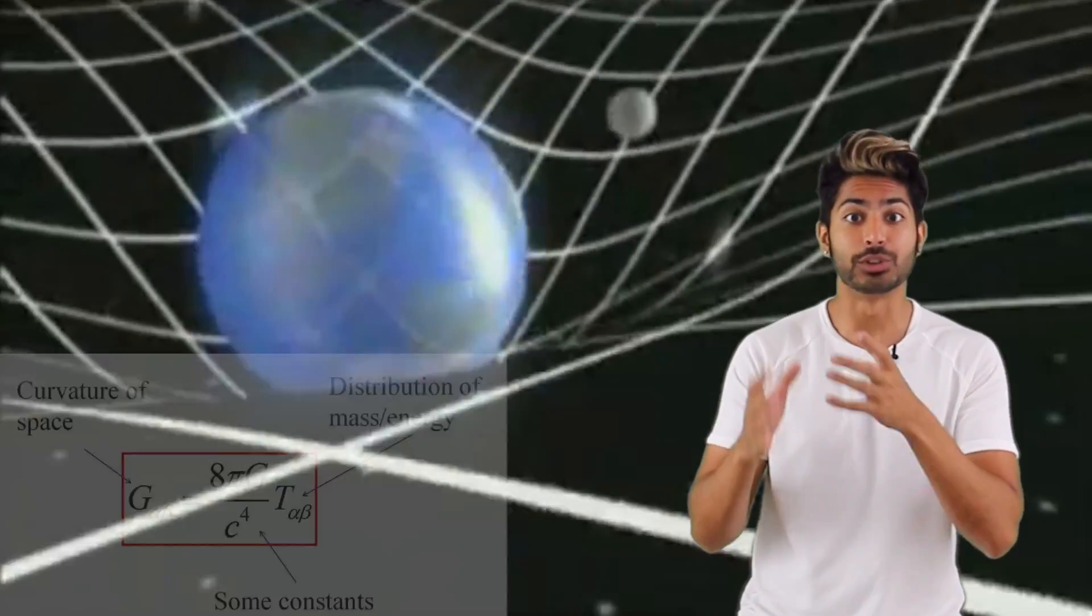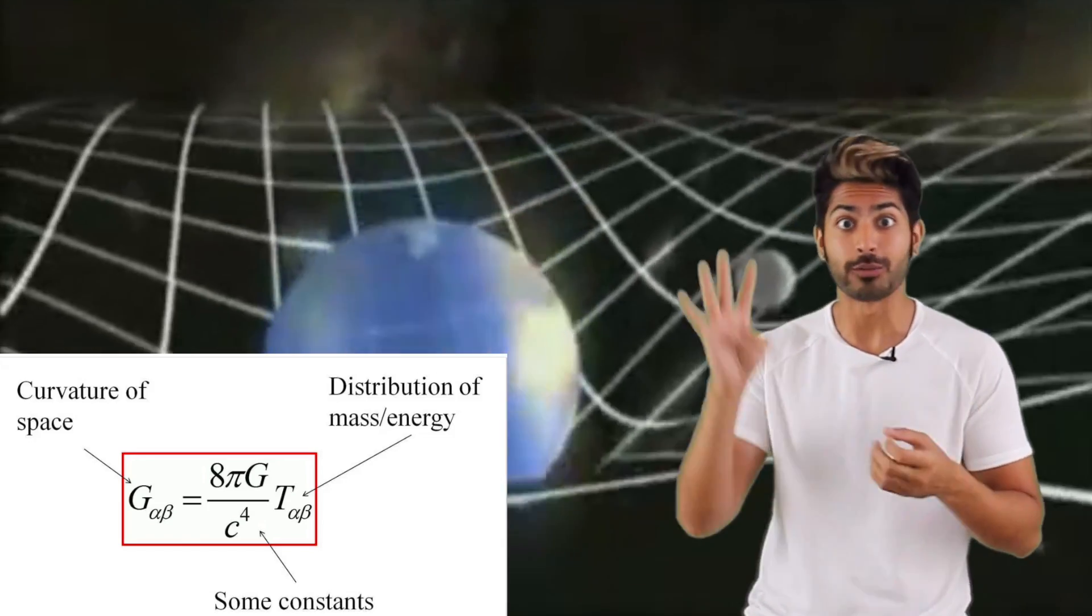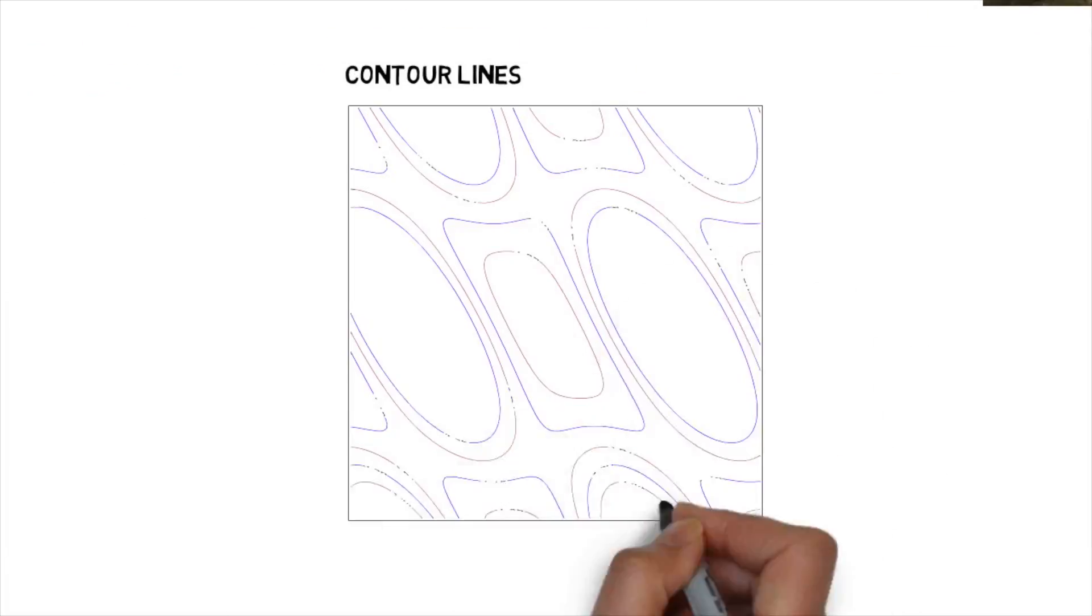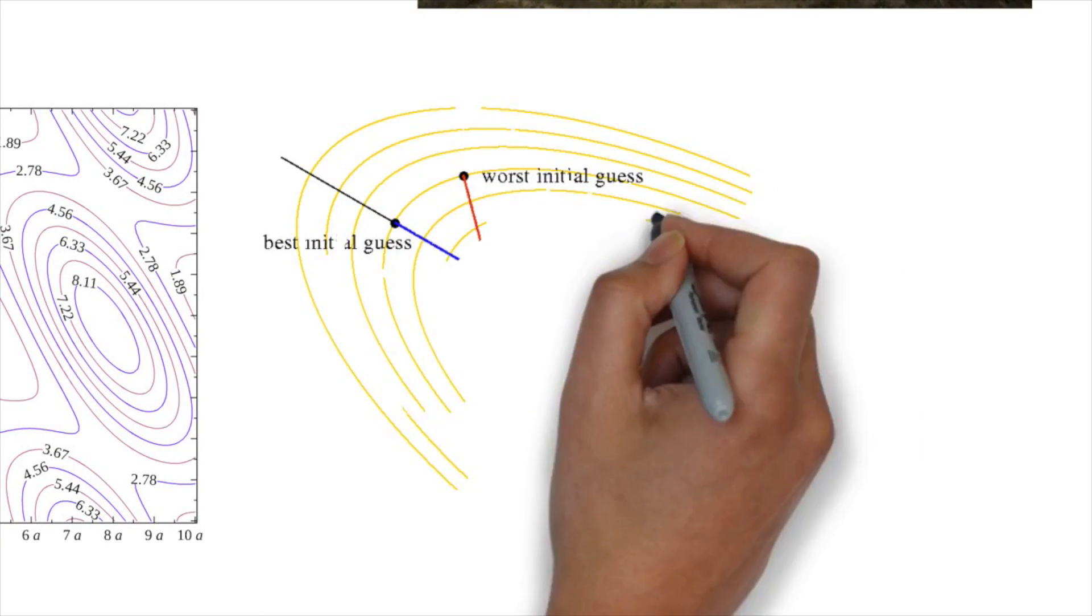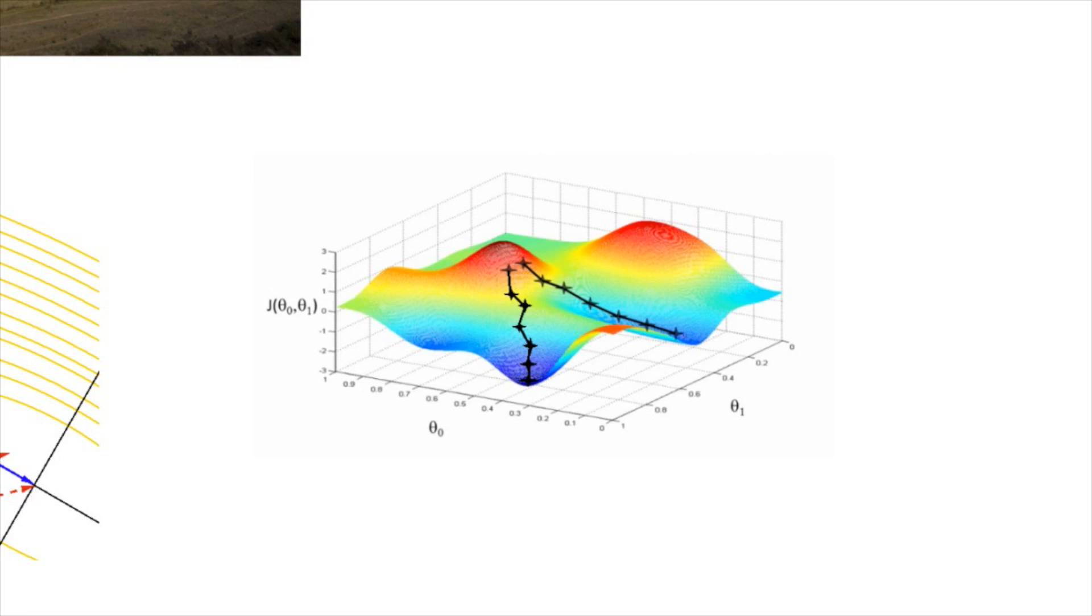For example, in Einstein's general theory of relativity, the curvature of space-time, which gives rise to gravity, is described by what's called a Riemann curvature tensor, which is a tensor of order 4. So badass. So we can represent not only the fabric of reality this way, but the gradient of our optimization problem as well during first-order optimization.